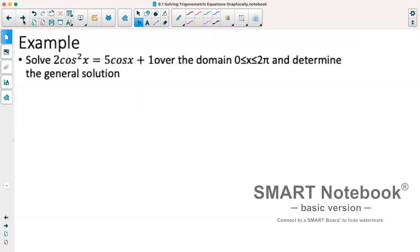First example: we've got 2cos²x = 5cosx + 1 over the domain from zero to 2π, and determine the general solution.